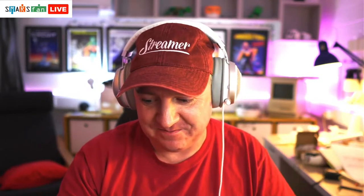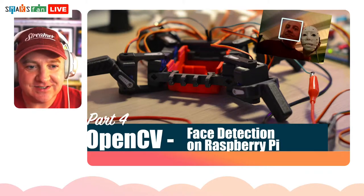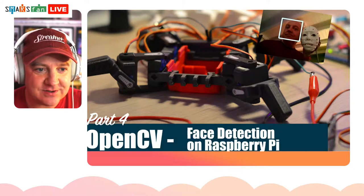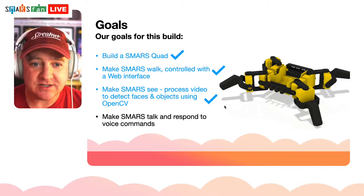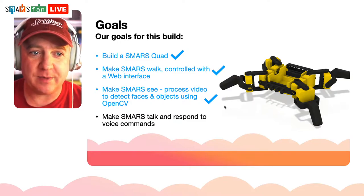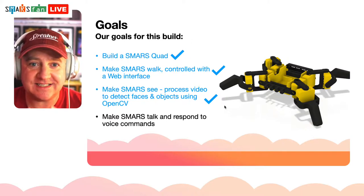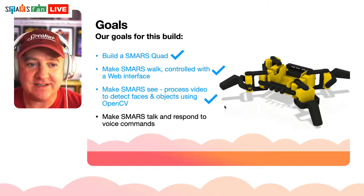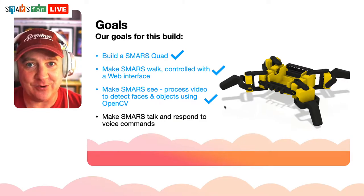We're back in Ecamm Live with some nice new slide designs. The goals for this series have been: build a Smarts quad (episode one), make our Smarts walk and be controlled by a web interface (last week), and this week we're making our Smarts see and process video to detect faces and objects using OpenCV. Next week we'll be making our Smarts talk and respond to voice commands.